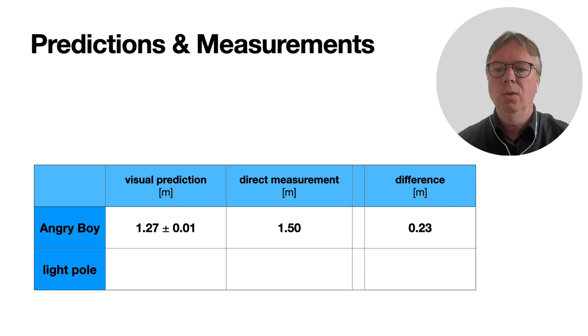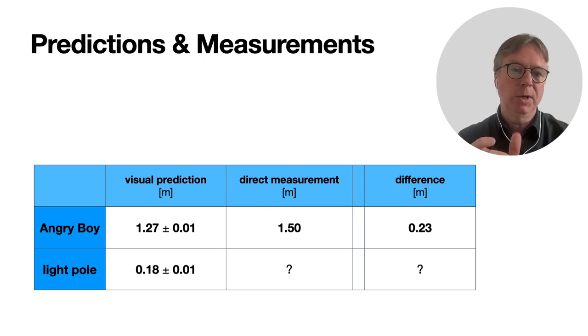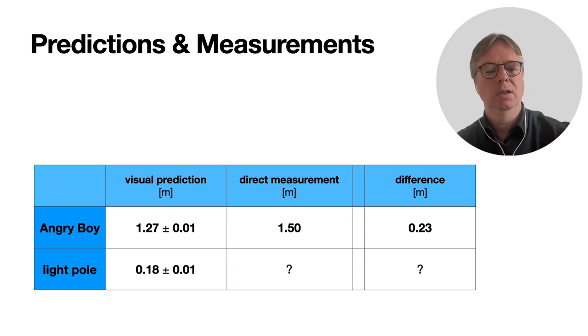Now let's look at the light pole. It's maybe a disappointment that I don't have measurements for it, but what I do want to point out is that the prediction from this method is that the light pole has a diameter of 18 centimeters, 0.18 meter ± 1, so that's pretty precise at a distance of about 30 meters from the lecture room.